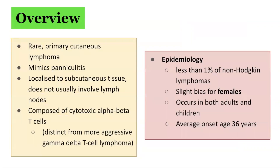What is subcutaneous panniculitis-like T-cell lymphoma, or SPTCL? This is a rare primary cutaneous lymphoma which mimics panniculitis in its appearance. It is localized to the subcutaneous tissue and usually does not involve the lymph nodes. It is composed of cytotoxic alpha-beta T-cells, and is distinct from a more aggressive group comprised of gamma-delta T-cells, which make up the gamma-delta T-cell lymphoma.